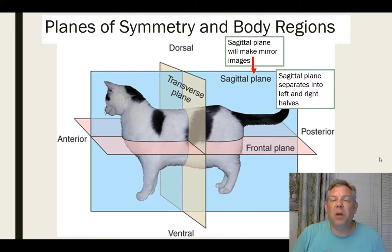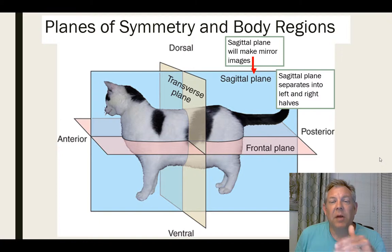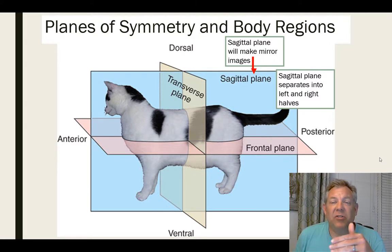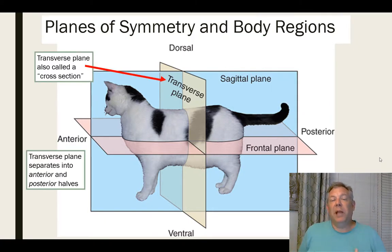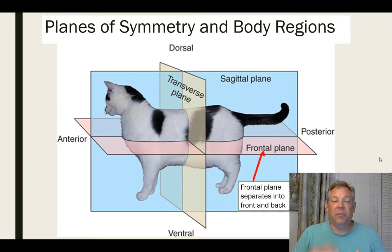We also want to talk about some more vocabulary that will help us describe animals — different planes that can bisect an animal. In a bilaterally symmetrical organism, the sagittal plane is the only plane that will make mirror images; it separates the organism into left and right halves. The transverse plane, also called a cross section, separates the animal into anterior and posterior halves. The frontal plane separates the organism into a front and back. These work mostly with bilaterally symmetrical organisms, but can work with any organism.